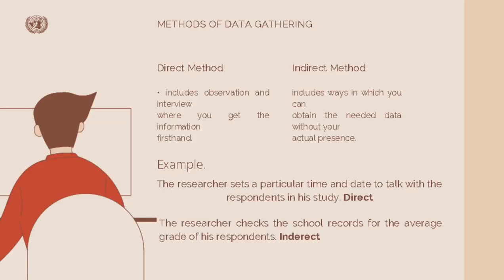For the methods of data gathering, we have two sides: direct method and indirect method. For direct method, it includes observation and interview where you get the information firsthand. For indirect method, it includes ways in which you can obtain the needed data without your actual presence. For example, for direct method, the researcher sets a particular time and day to talk with the respondents in his study.